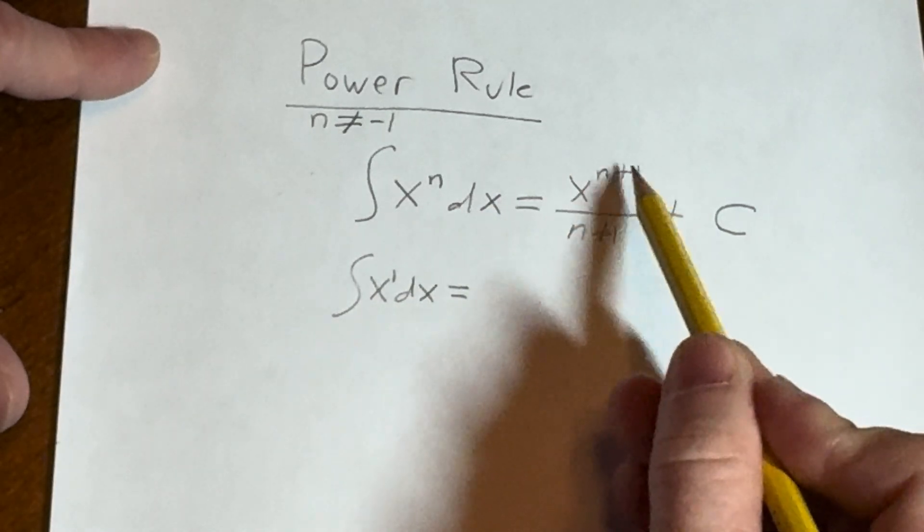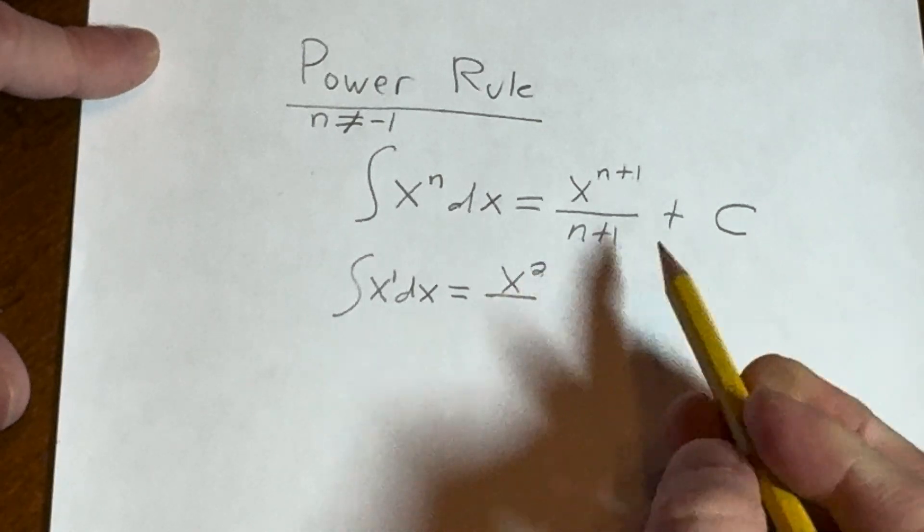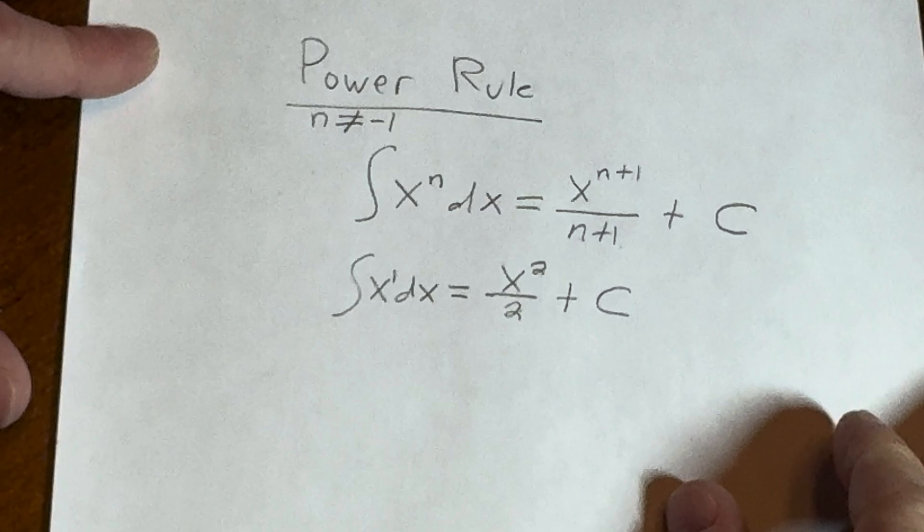Applying the power rule you would get one plus one which is two, over again n is one so one plus one which is two. So you have x squared over two plus our constant of integration.